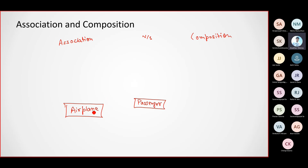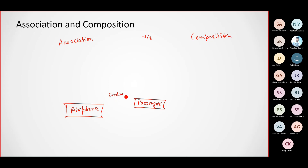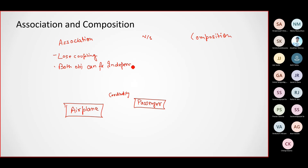What kind of relationship is there between airplane and passenger? Choose from association versus composition. It's an association — why? Because association is loose coupling. Both objects can function independently. It's a loose coupling, a 'should have' relation.